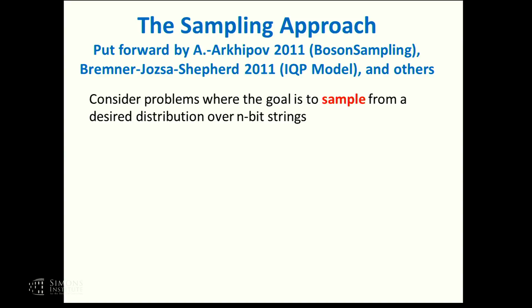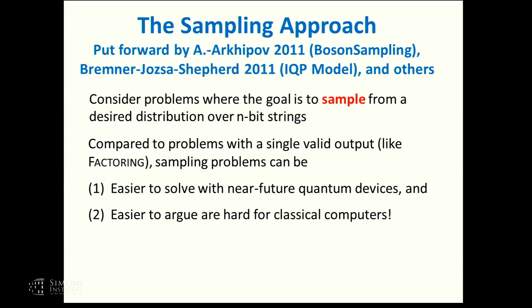The roots of this go back to work in 2004 by Terhal and DiVincenzo. The modern renaissance connecting the hardness of sampling problems to the belief that the polynomial hierarchy is infinite was done independently by Bremner, Jozsa, and Shepherd with their IQP model, and also by me and Alex Arkhipov with boson sampling. For exact sampling problems, we can be much more confident they are classically hard than we are that factoring is classically hard. If there's a fast classical factoring algorithm, that would collapse much of the world's digital economy, but as far as we know, it would not collapse the polynomial hierarchy — which to a complexity theorist is the much more impressive collapse.